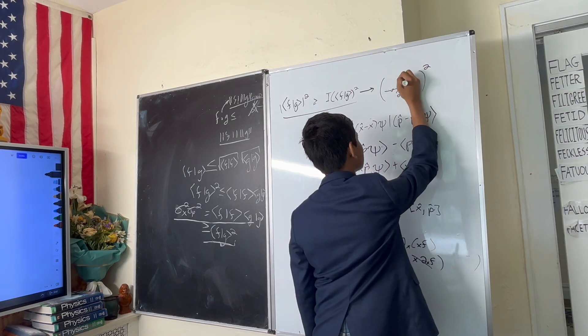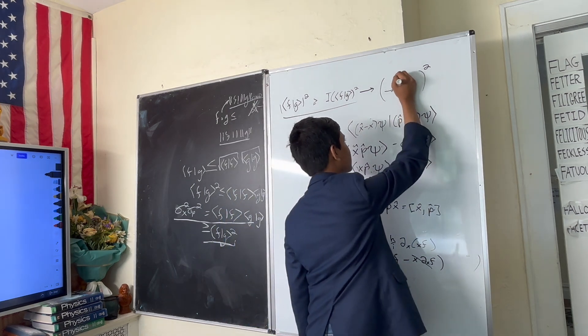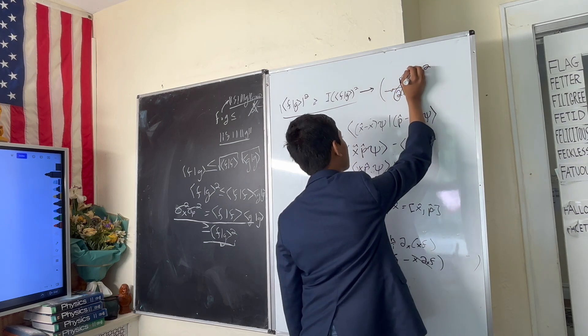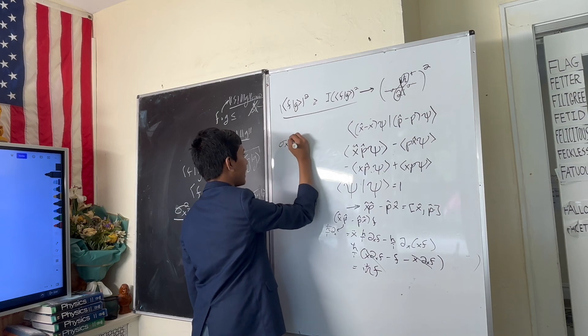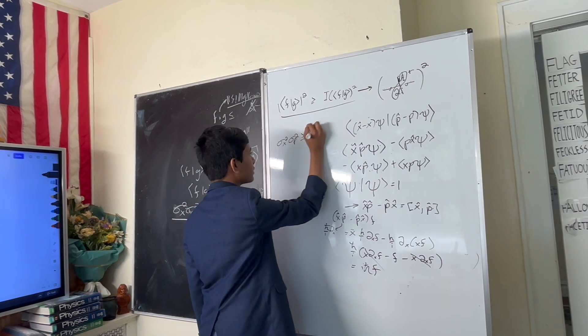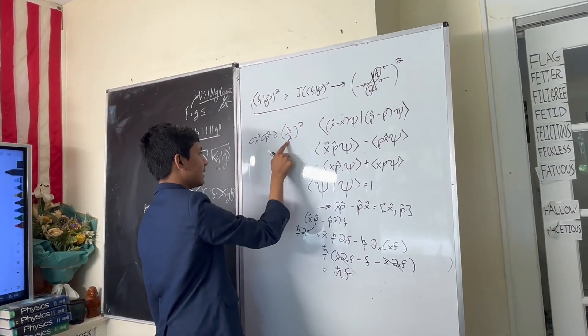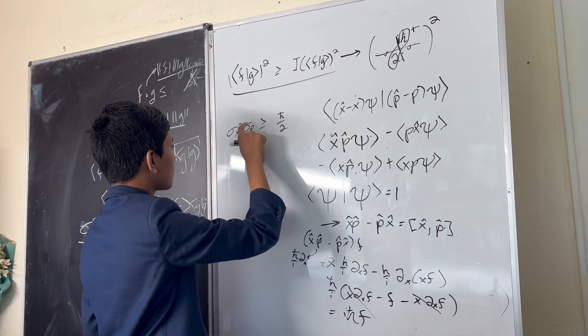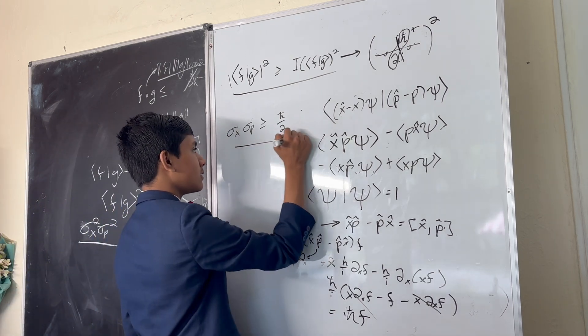And so you cancel out the two i's, which means whatever's left over is a strictly positive number, and you get that the standard deviation of x multiplied by p has to be greater than or equal to h-bar over 2 squared. And so since both of these have to be strictly positive under the squares, you don't have to insert a plus minus, and we can say this is true.